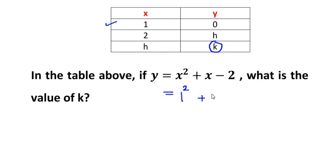Let us take the x value as 1. So it is 1 square plus 1 minus 2. So 1 square is 1, so 1 plus 1 is 2, and 2 minus 2 is 0. You can see that when we substitute the value of x as 1 in this given function, we get the value of y as 0.